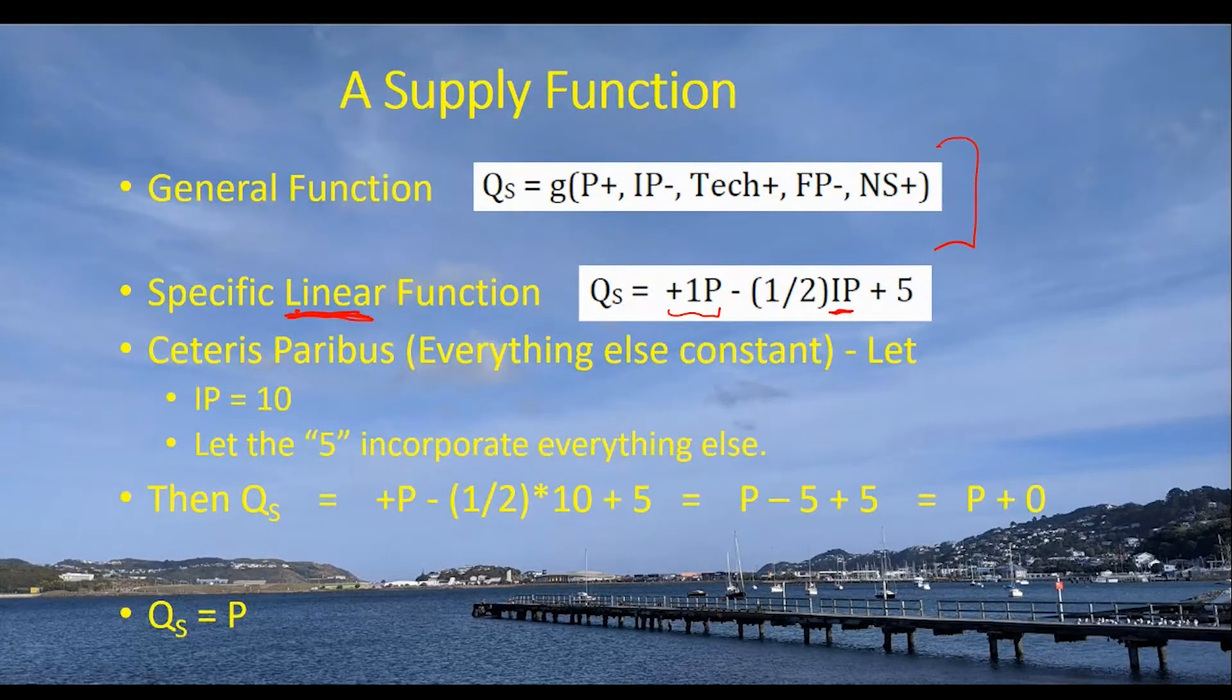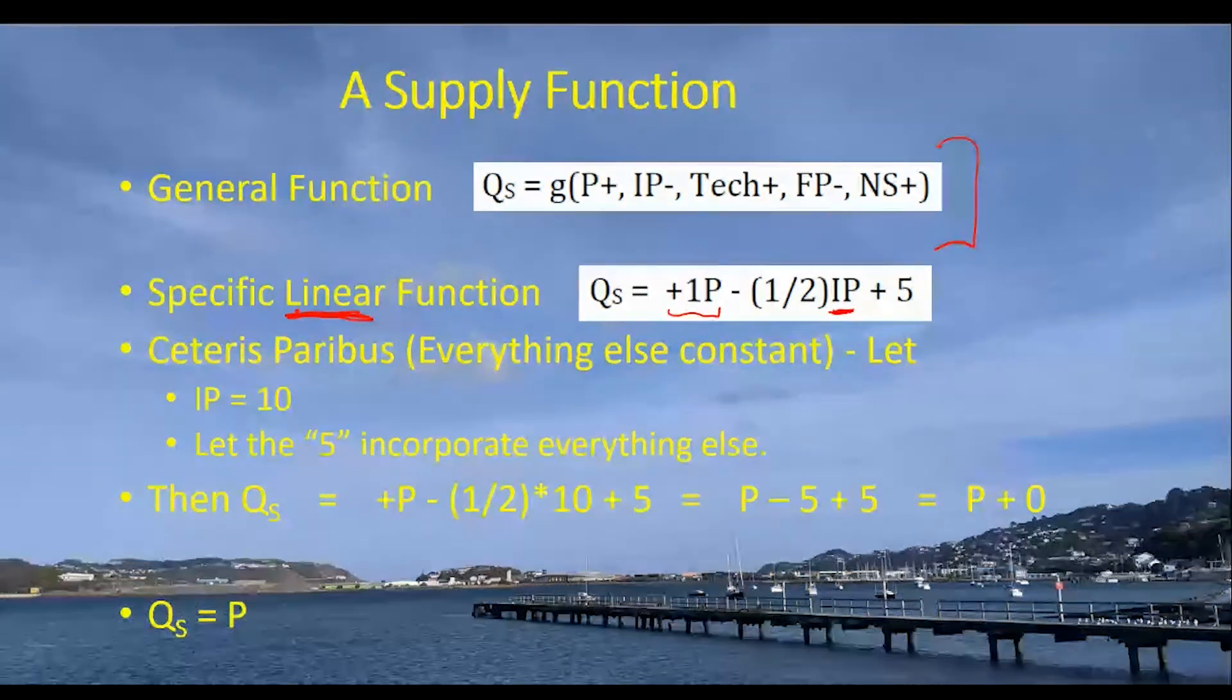And then the second variable I've got listed here is input prices in this equation. Let's take the input prices and we'll multiply it by one half. And then there's a negative relationship here, minus. So that shows that as input prices go up, the quantity supplied is going to go down. The values of the parameters are kind of nonsensical, but it's giving us the direction of the effects and that's all we really need.